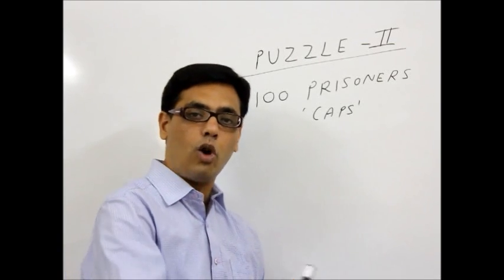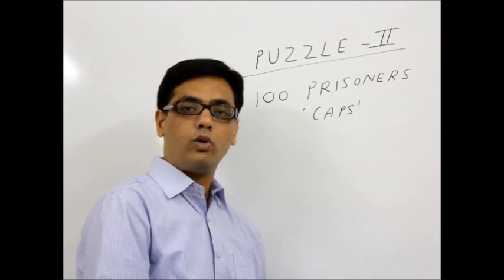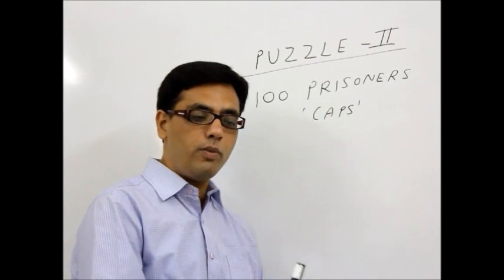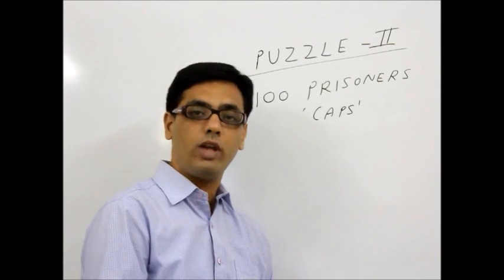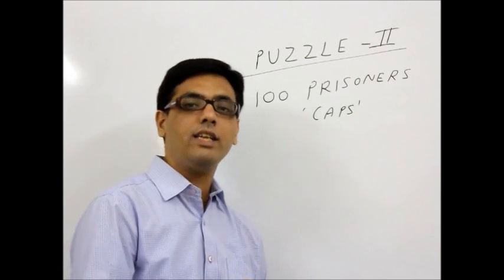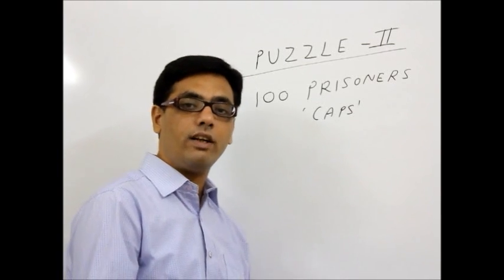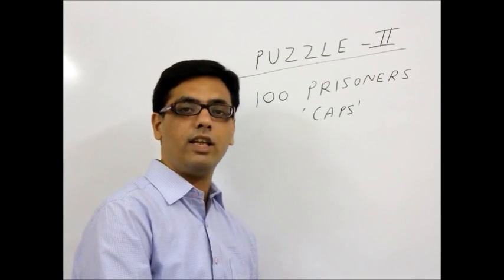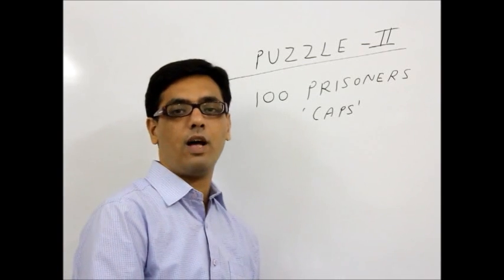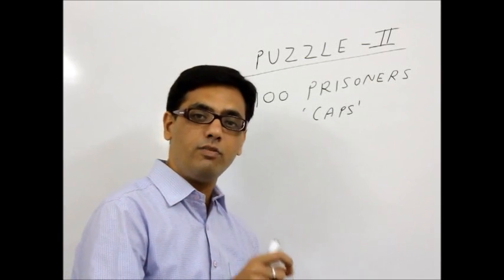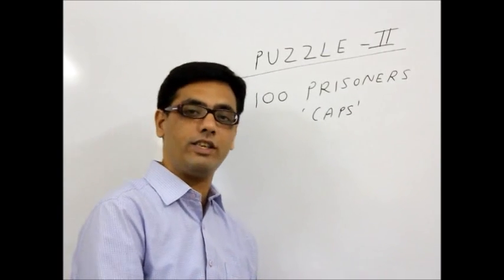The jailer asked this question to all 100 prisoners starting from the last prisoner. Now the question is, assuming that these prisoners know that something like this is going to happen with us tonight, what strategy do they plan? How do they plan something? What do they do as a team so that they should be able to save maximum number of people among them? So what is this maximum number which they can save and how? This is the question.